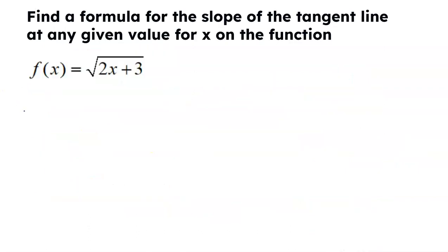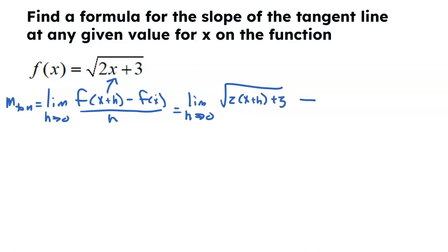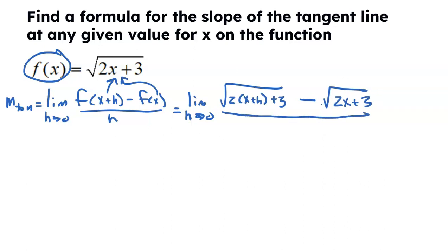Let's try another one — a good old square root one. Again, I want to find a formula for the slope at any given point on this function. The slope of a tangent line at any given point is defined as the limit as H approaches 0 of F of X plus H minus F of X divided by H, keeping it generic. Now I'm literally going to plug X plus H into this function. So I get the limit as H approaches 0, and I get the square root of 2 times X plus H plus 3, minus — now plugging X into the function — the square root of 2X plus 3. You cannot distribute a minus sign through a square root, so please don't make that a negative 2X minus 3. All divided by H.